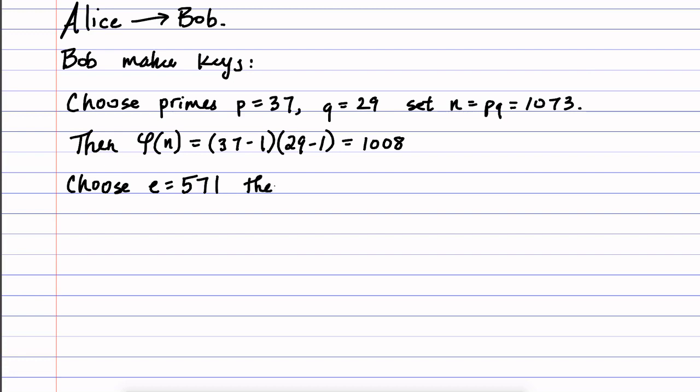And then you need to find a corresponding d. So then from E we can compute d, and that's by solving the equation 571 times d is 1 mod phi of n, so 1008.